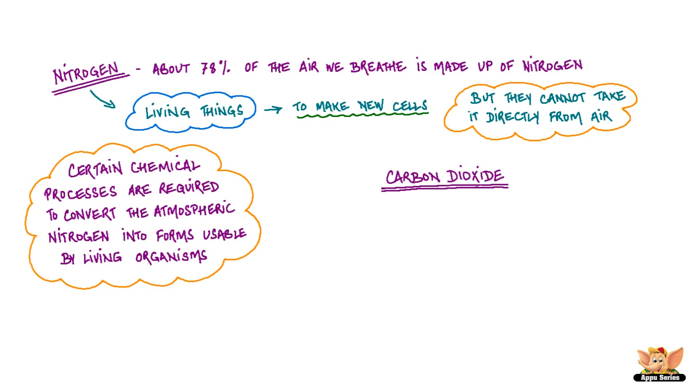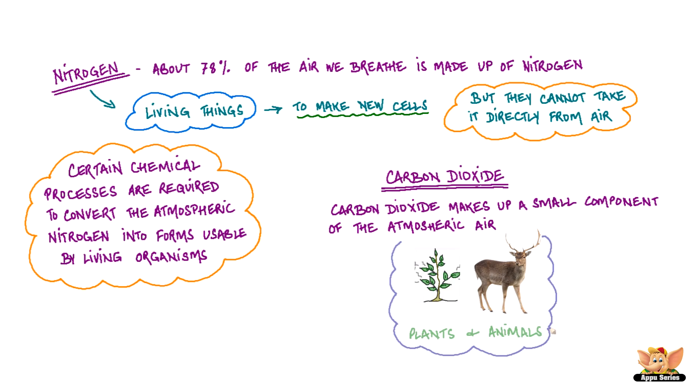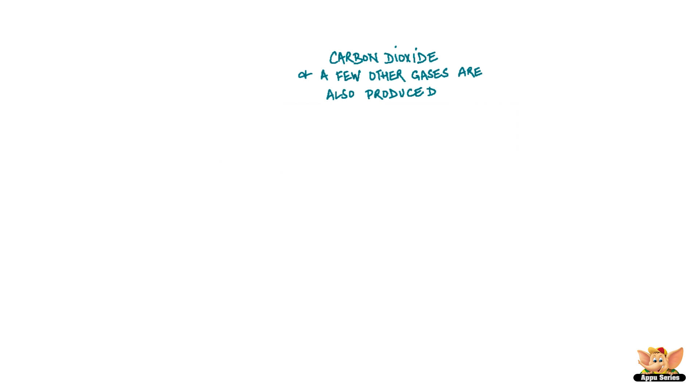Carbon dioxide makes up a small component of the atmospheric air. Carbon dioxide and a few other gases are also produced when plant and animal matter burns.